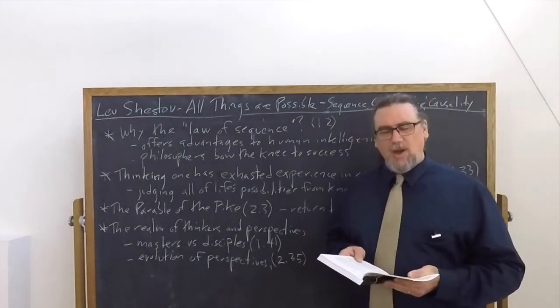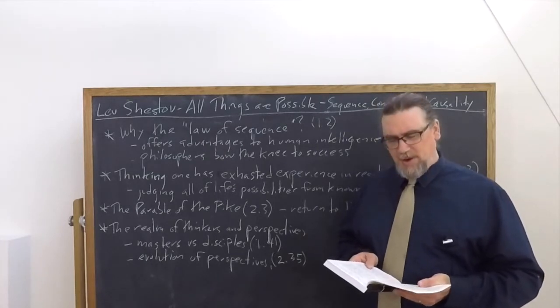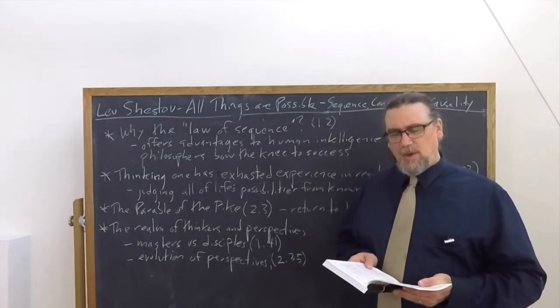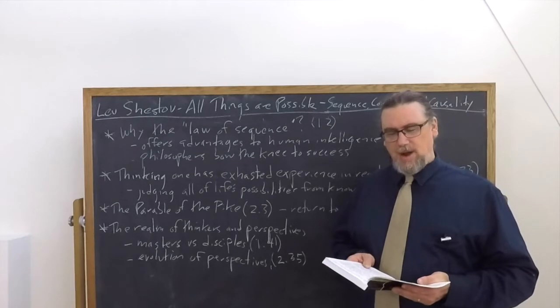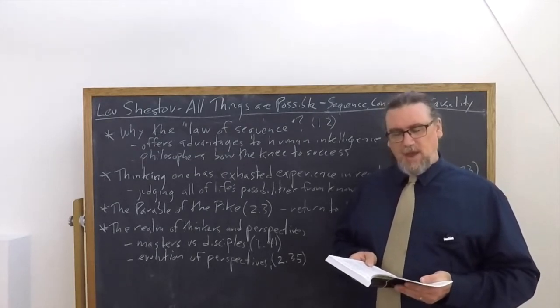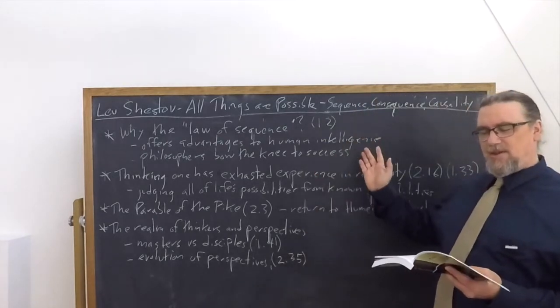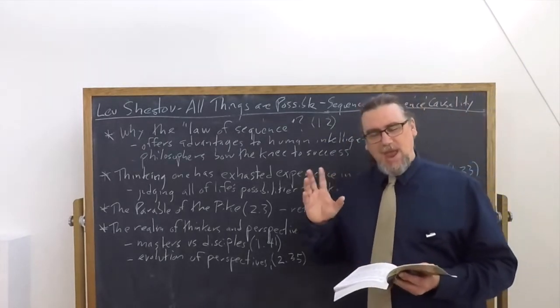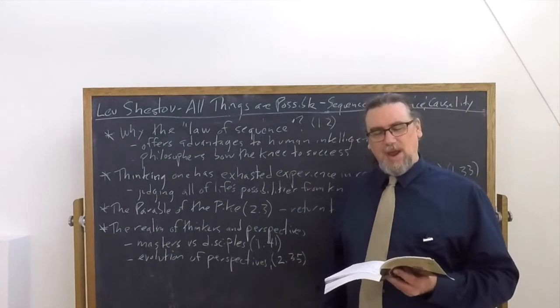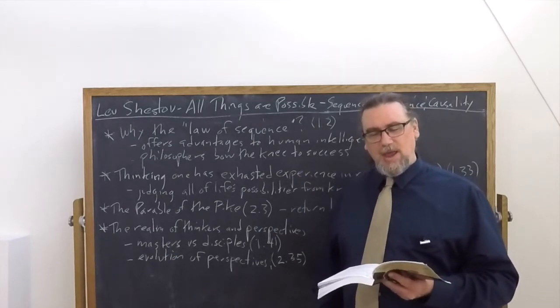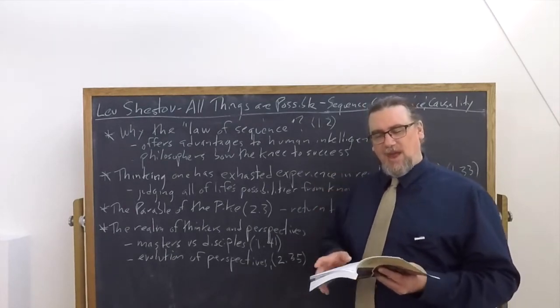And then he says, this law of sequence is actually the most mysterious of all the natural laws. Why so much order? Why not chaos and disorderliness? Really, if the hypothesis of sequence had not offered such blatant advantages to the human intelligence, man would never have thought of raising it to the rank of eternal and irrefutable truth, but he saw his opportunity.